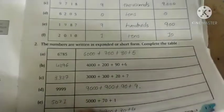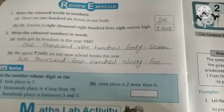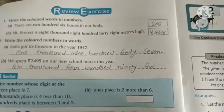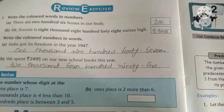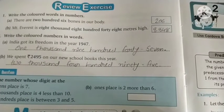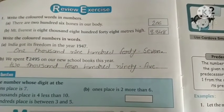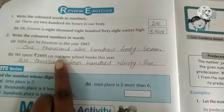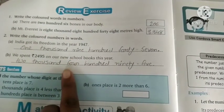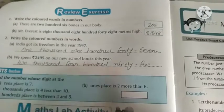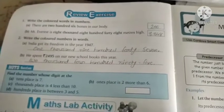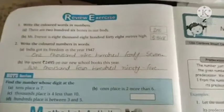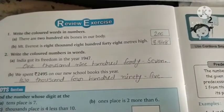This is the review exercise of chapter 1. For 206, write 2-0-6. For 848, write 8-4-8. For 1947, read it as one thousand nine hundred forty-seven. For 2495, read it as two thousand four hundred ninety-five. This is the chapter 1 revision. I hope you all are clear. Thank you.